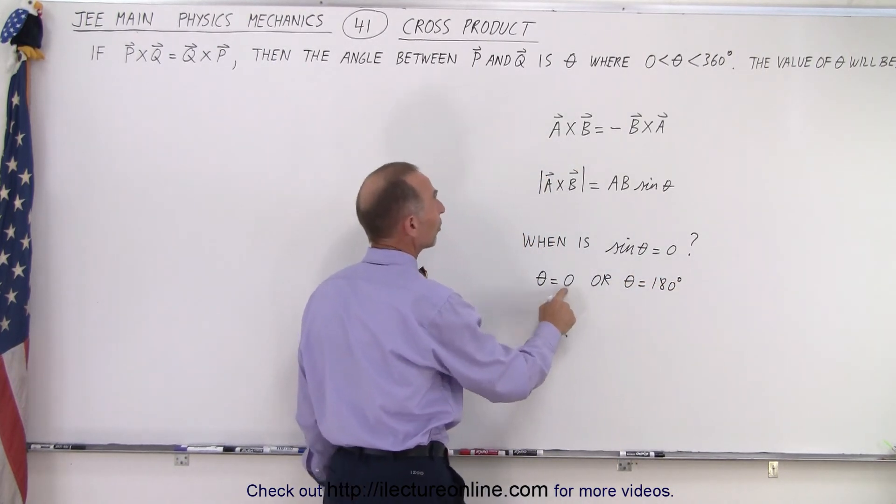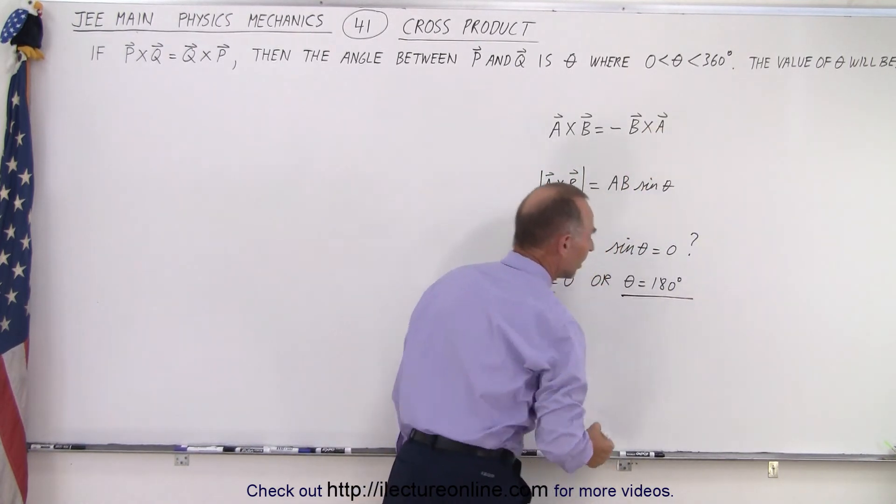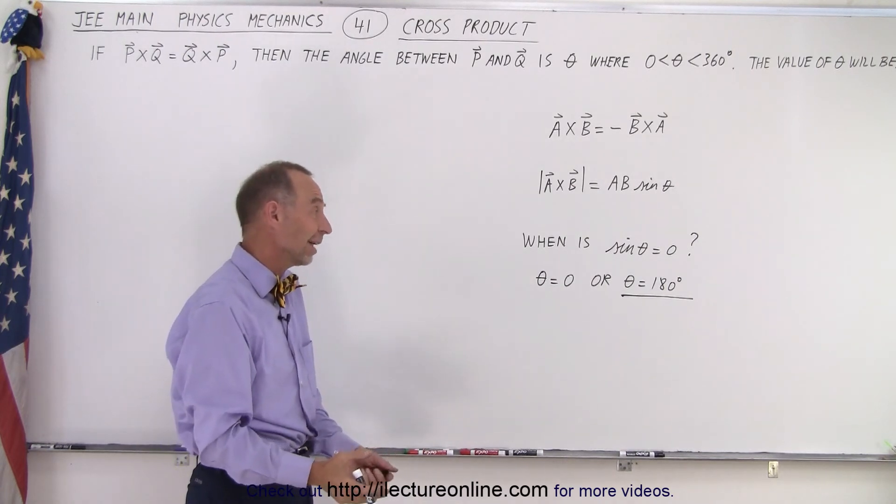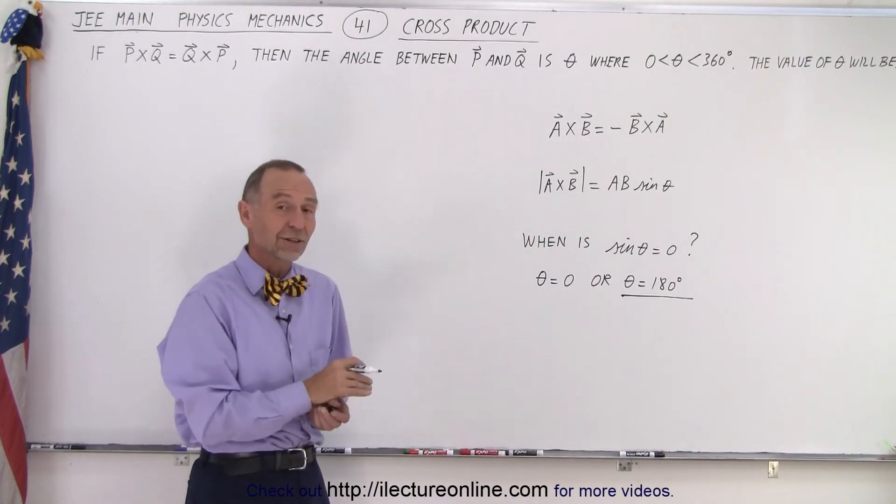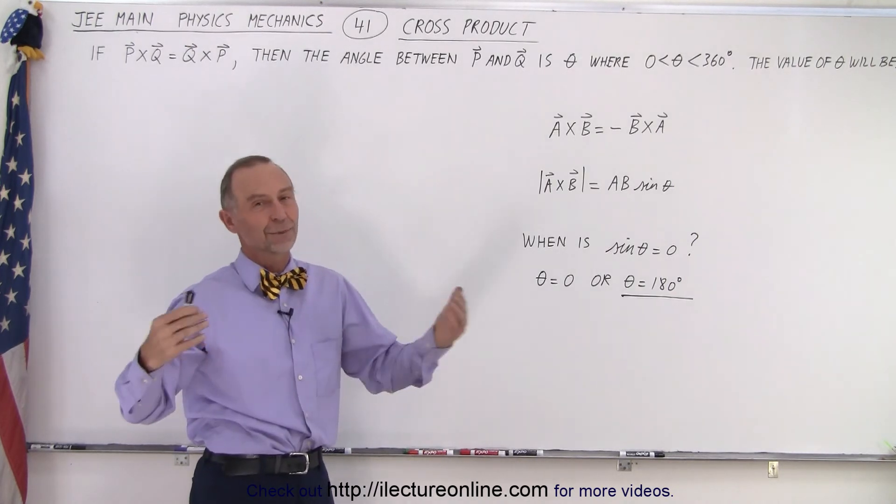When theta equals 0 or when theta equals 180 degrees. So, since theta equals 0 does not fall within the range given, then the only solution is that theta must, therefore, equal 180 degrees. Because that means that the sine of 180 is 0, and yes, then the two vector products will indeed be equal to each other because they're both 0.